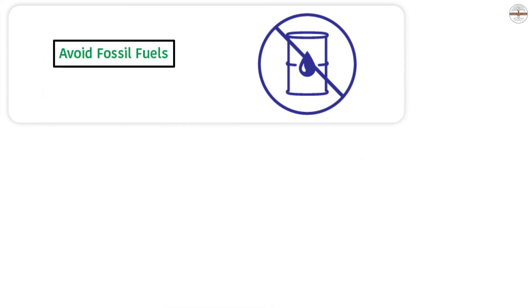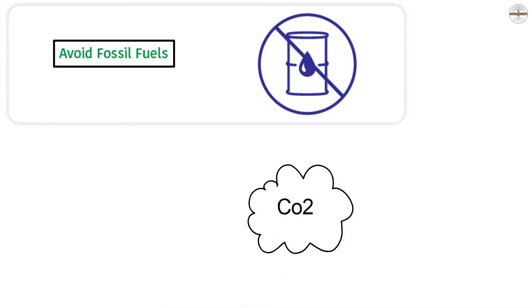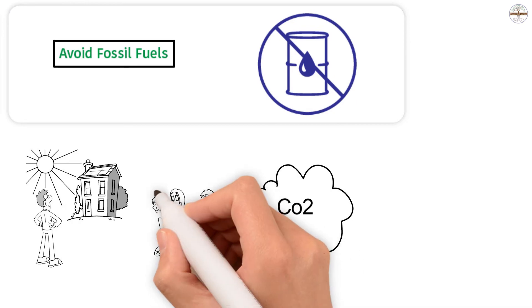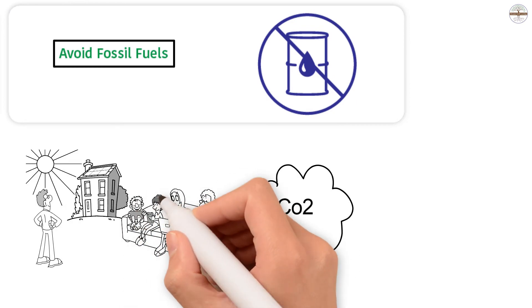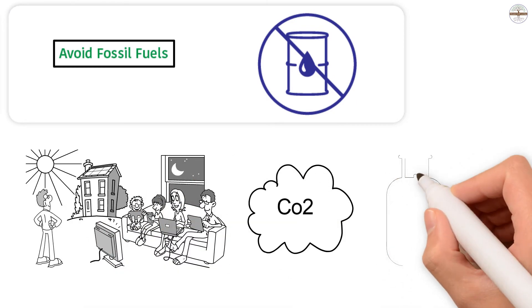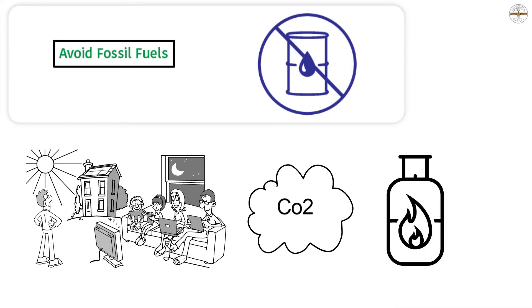Avoiding fossil fuels is another solution. There is a lot of CO2 released when fossil fuels are burned. People need clean energy, like solar panels, as an alternative to coal and oil. There are also other gases from fossil fuels that cause climate change.